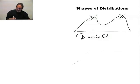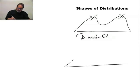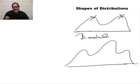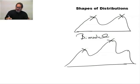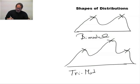If I see something that has perhaps three obvious mounds to it — not three mounds if you squint and kind of pretend a little bit, but three obviously higher peaks, one, two, three — we would refer to this as being tri-modal.